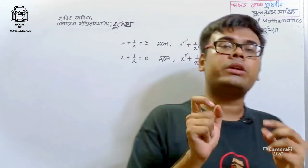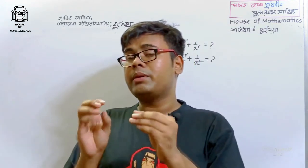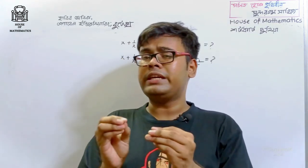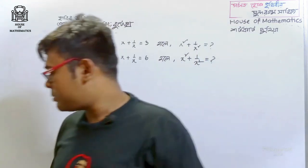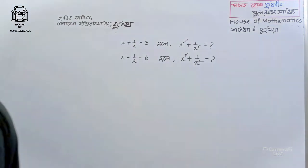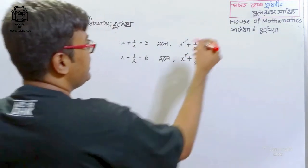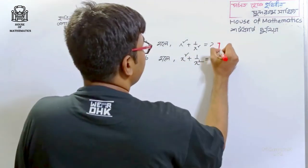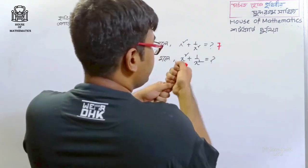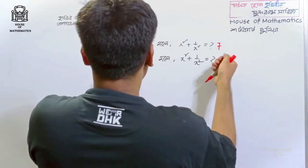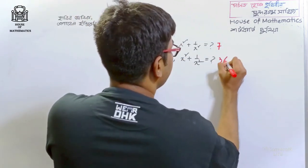If we are learning a shortcut process, we will ask the answer to the most important thing. The answer is 7. If we ask the answer, the answer is 34.